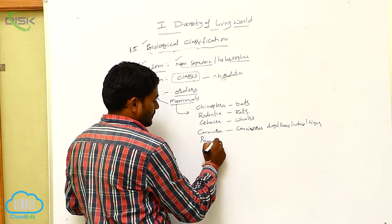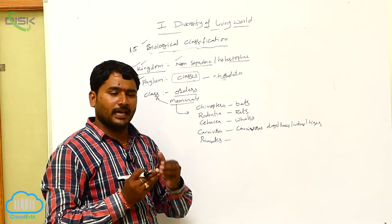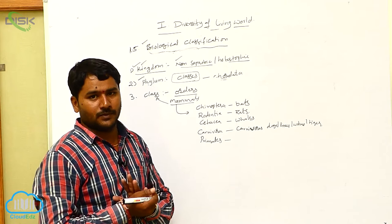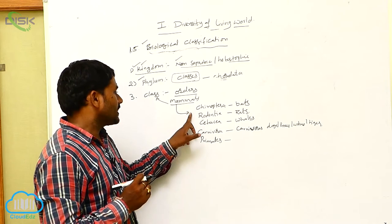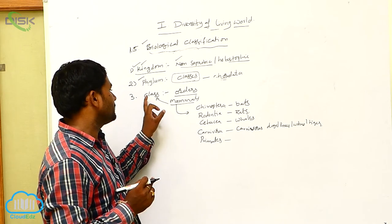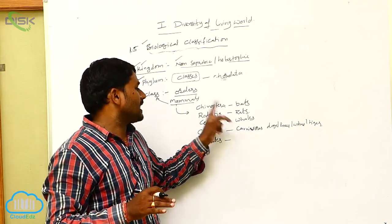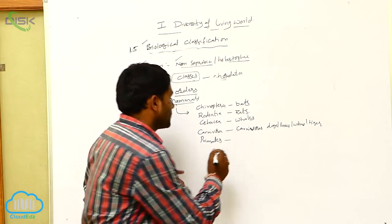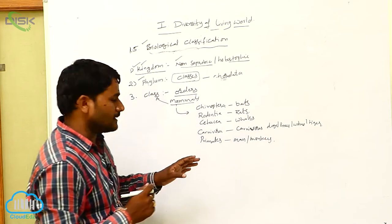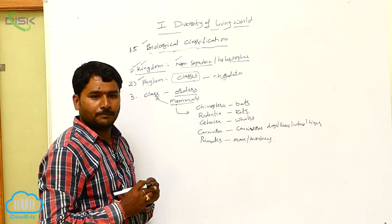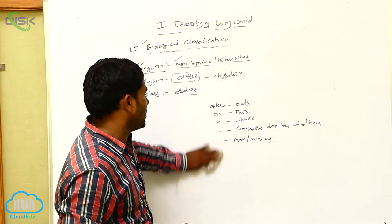Next one is Primates. If you take monkey, gorilla, ape, chimpanzees — and human beings also. Human beings belong to the Primates order. So these are the different types of orders placed in the Mammalia class: bats, rats, whales, carnivores, and primates — man, monkey, chimpanzee, gorilla — all come under the primate group.